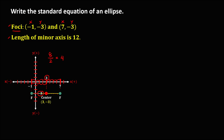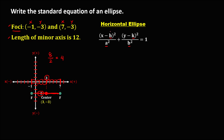Since the foci are in a horizontal position, this ellipse is a horizontal ellipse. The formula for a horizontal ellipse is: (x − h)² / a² + (y − k)² / b² = 1. We need to find the values for h, k, a, and b. Since h and k come from the center, h = positive 3 and k = negative 3.